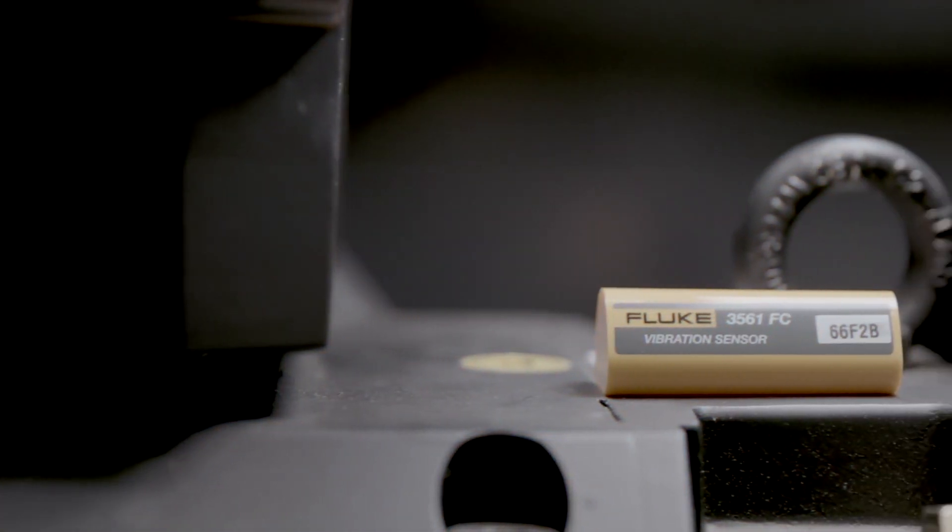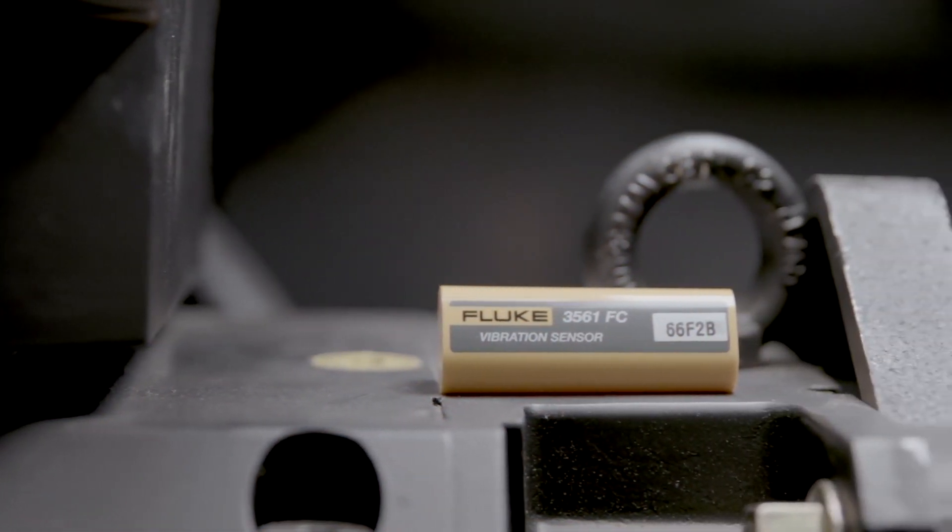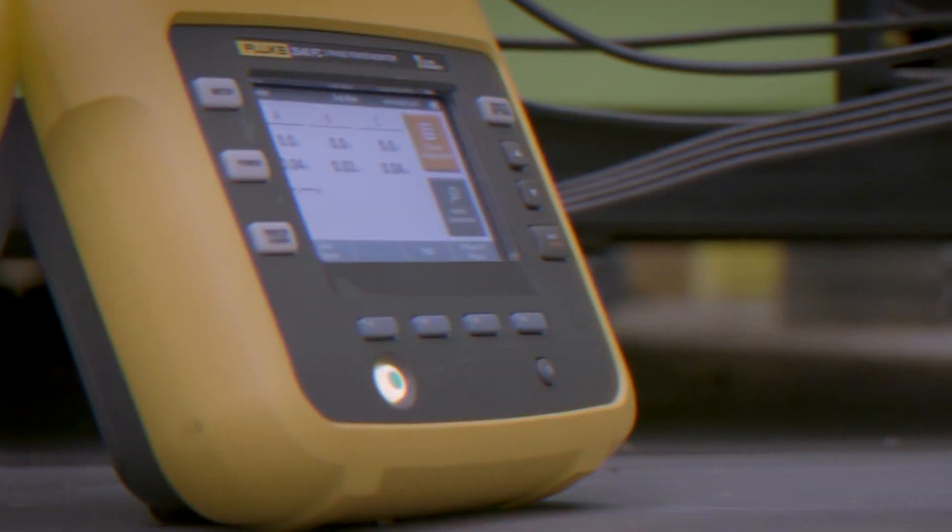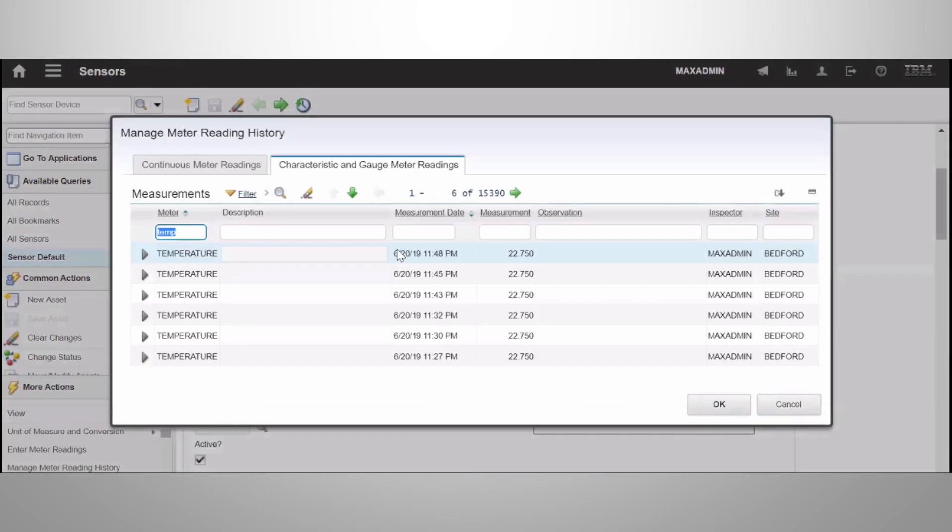Fluke Connect's condition monitoring sensors send asset data into your existing Maximo system so you can view your asset health. Your equipment data can then be viewed and analyzed.